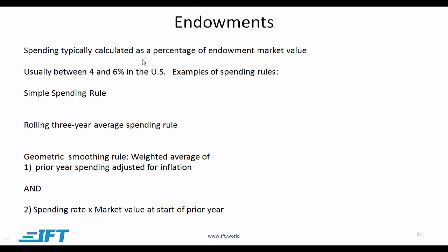Endowments. Spending is typically calculated as a percentage of endowment market value. Large universities and operating entities have endowments that help cover some of their expenses. Normally, spending is between 4 and 6% of assets in the US, and to determine the exact amount, every endowment follows a particular spending rule.